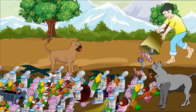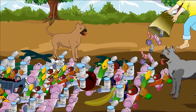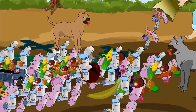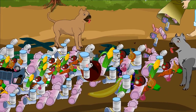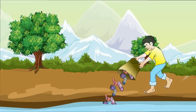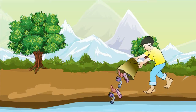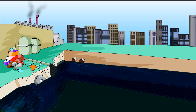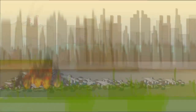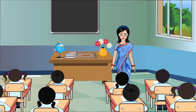The waste produced in large quantity leads to pollution of land, water, and air. Insects and animals gather around waste thrown on land. Stagnant, dirty water is a breeding ground for mosquitoes, resulting in the spread of diseases. Burning the waste material causes air pollution. Pollution affects our health very badly.